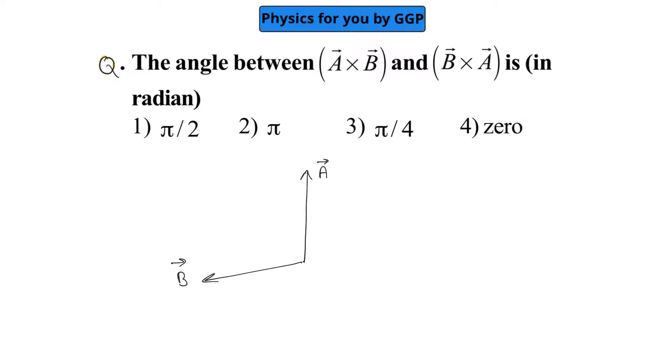So if you are going for A vector cross B vector, then we will get the direction of A cross B by using the right-hand thumb rule along the x-axis. So we can write, let's say, this is C vector.